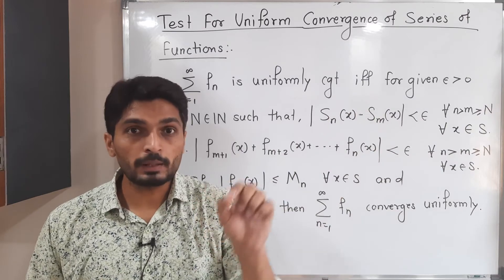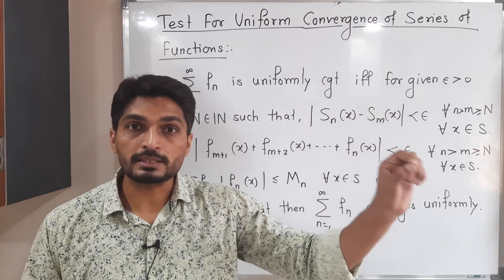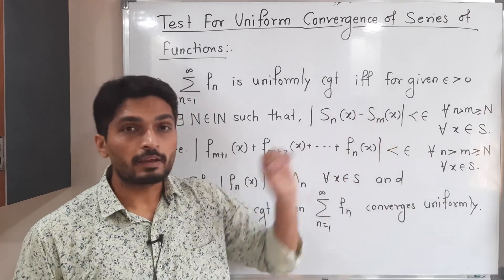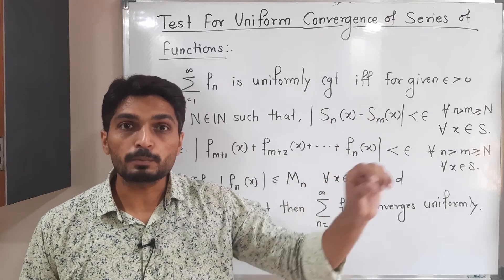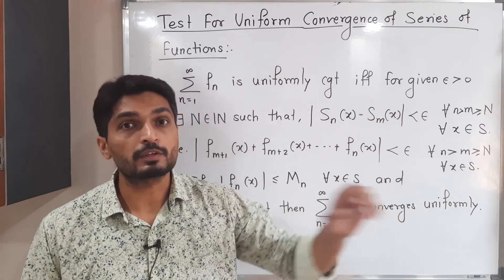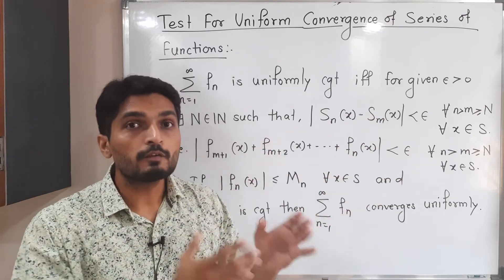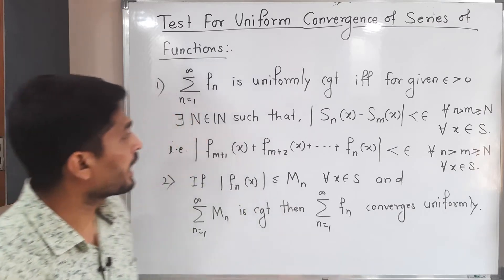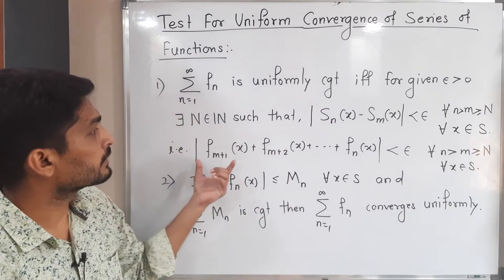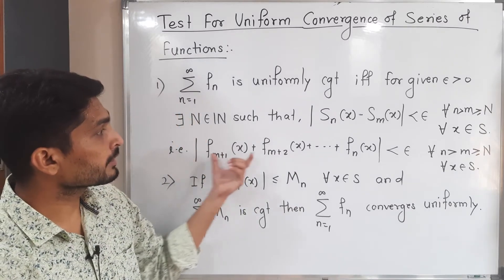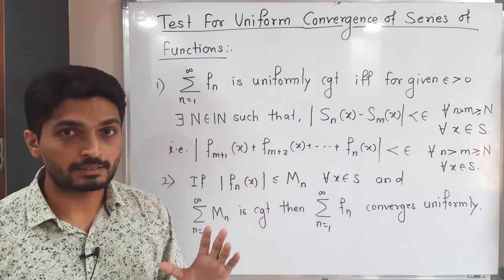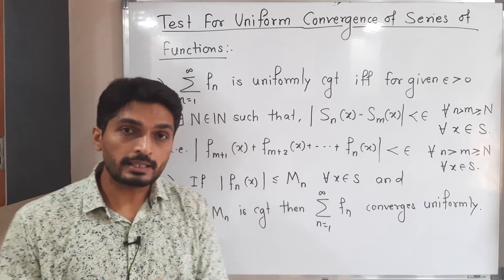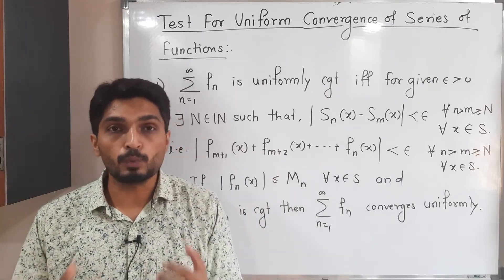Since SN = F1 + F2 + ... + FN and SM = F1 + F2 + ... + FM, when you substitute these into the expression, the first M terms cancel each other, leaving the remaining terms inside the modulus. This completes the first test.